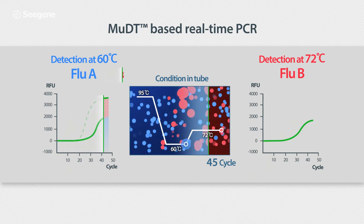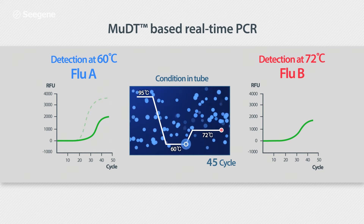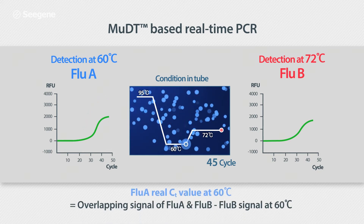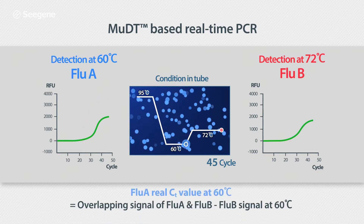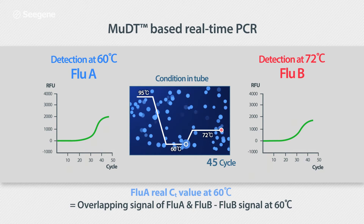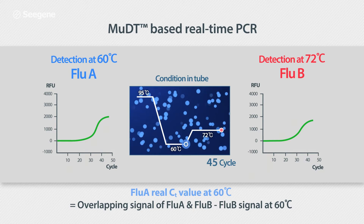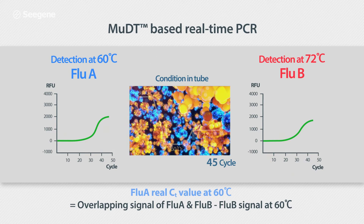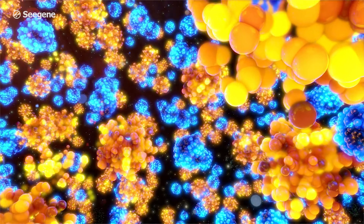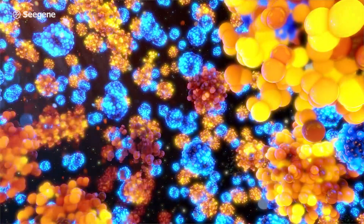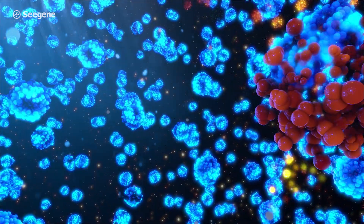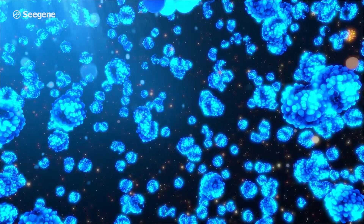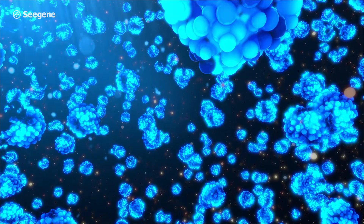Now, MUDT works in this step. It exactly subtracts the fluorescent signal for Flu A from the overlapping signal collection at 60 degrees Celsius. MUDT then converts the subtracted fluorescent signal for Flu A into a CT value.